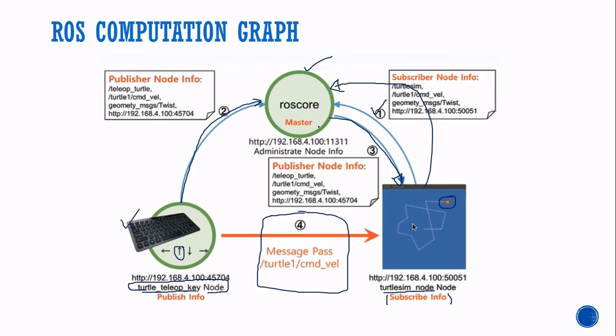In the first step, the subscriber informs the master 'I am the subscriber.' In the second step, the teleop key node tells the master 'I am the publisher.' In the third step, commands from the publisher are given to the subscriber through the master. The fourth step indicates that if the master crashes unexpectedly, we can send commands directly to the subscriber.